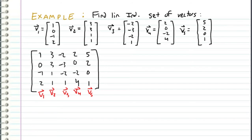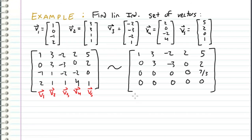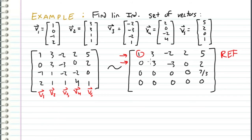So in a previous video, I showed the same matrix and I showed how to find the pivot columns, so I'm going to skip that step. And we showed that it was row equivalent to this matrix, which is the REF, the row echelon form of the matrix. And we were able to pick out the pivot columns as the first non-zero entries in each row.